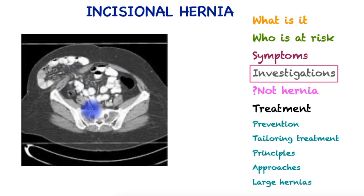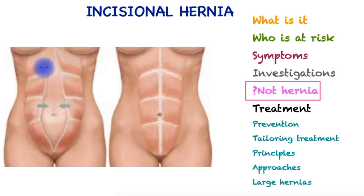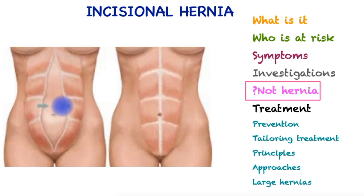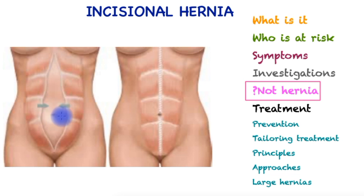A CT assessment is invaluable in planning repair of complex hernias. A related condition is diastasis recti, in which the two midline muscles are separated by elongation of the tissue binding them together. This is common in middle-aged and older males and in young females after pregnancy. It is not a true hernia but can co-exist with incisional hernia.